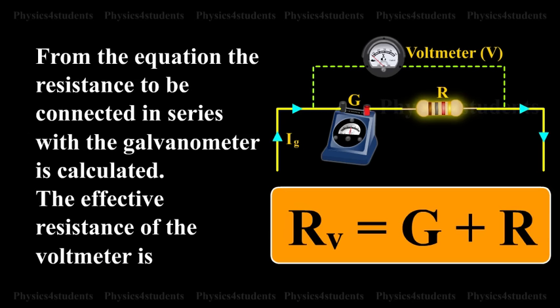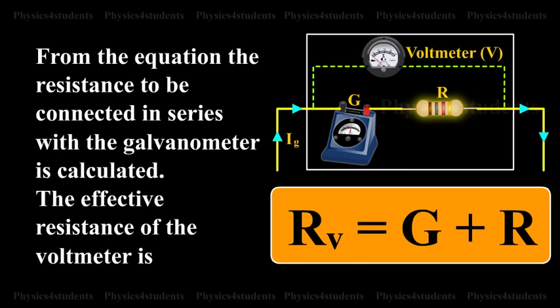The effective resistance of the voltmeter is Rv is equal to G plus R. Rv is very large and hence a voltmeter is connected in parallel in a circuit as it draws the least current from the circuit.